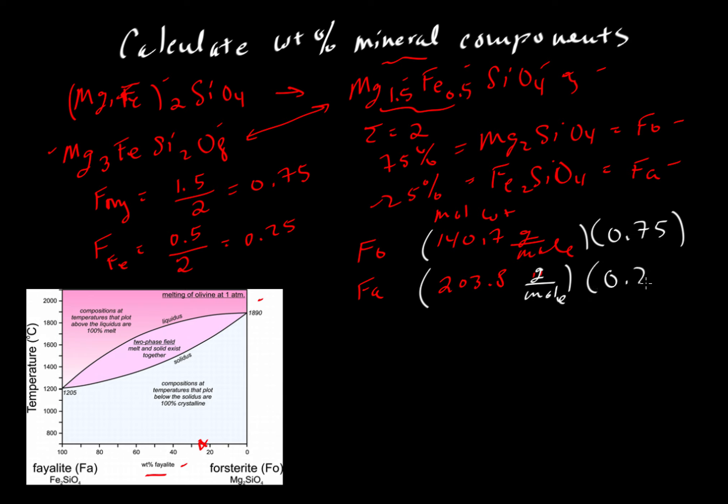For the top one, we'll get a value of 105.525, and that is the weight of forsterite. And for fayalite, we would get the number 50.95.